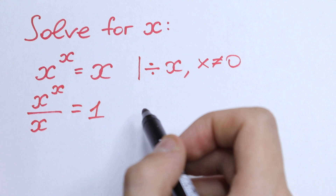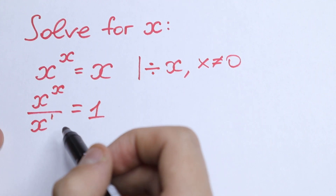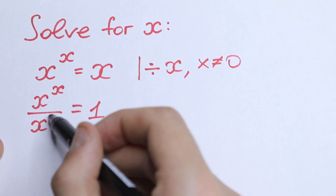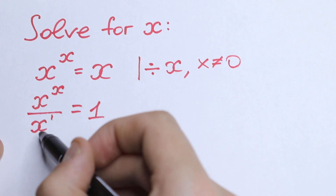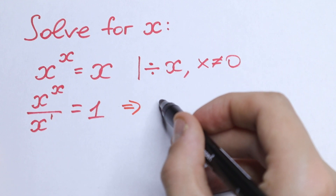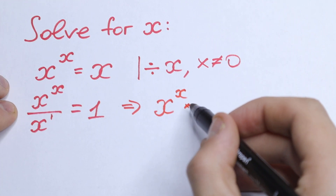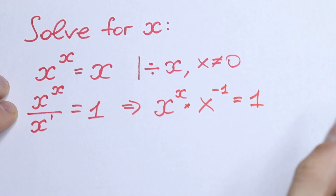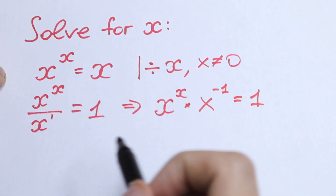What are we going to do next? Take a look — we have our x, and I write it as x to the first power. We can bring this x to our denominator and put a minus in the exponent. So we have x to the power x times x to the power minus 1, equal to 1.